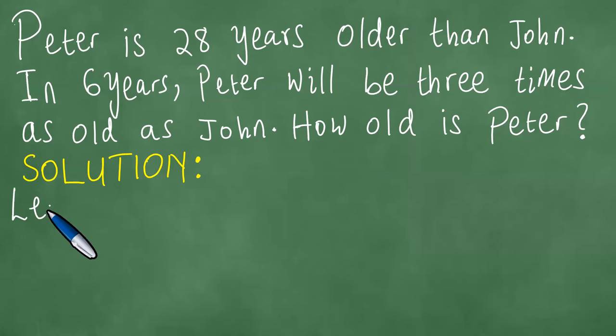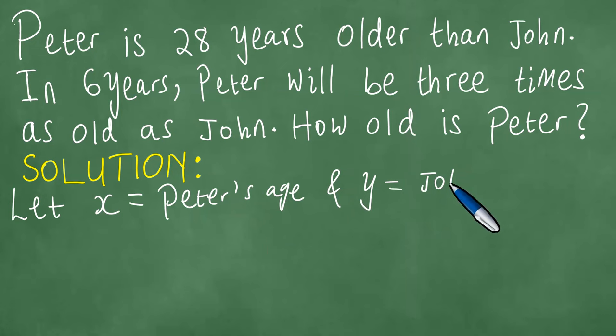To solve this problem we let x be equal to Peter's age, and y be equal to John's age. But Peter is 28 years older than John. Because Peter is older, it means that if we take Peter's age and we subtract John's age, the difference will be 28. And we can label this equation 1.